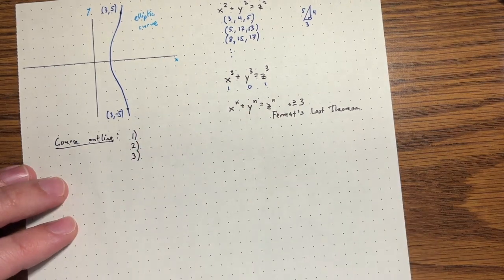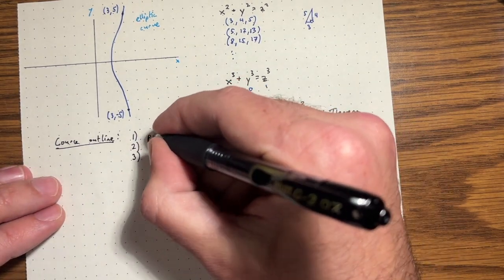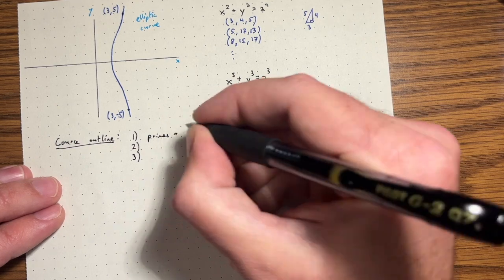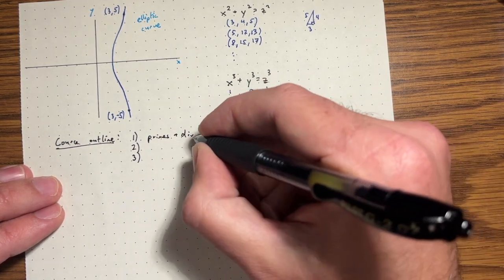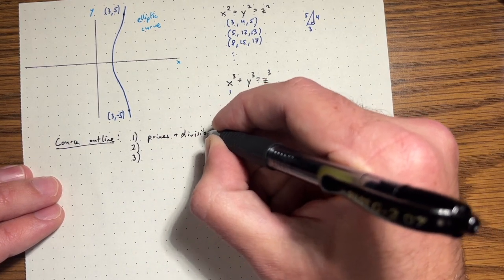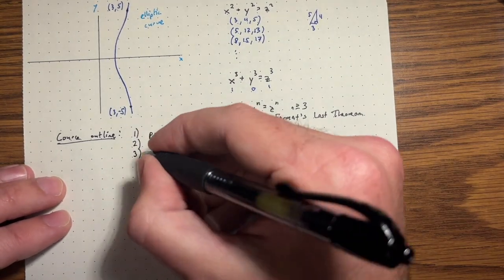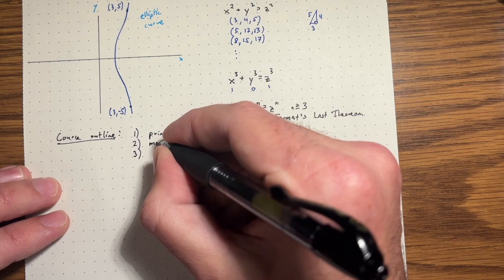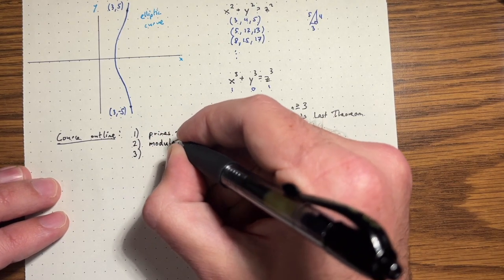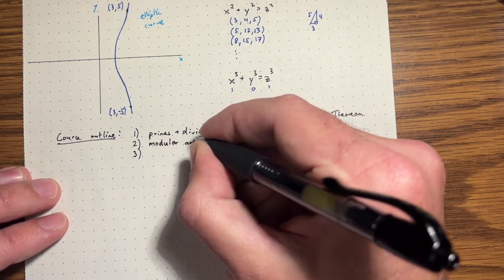So the first part, we're going to really investigate primes and divisibility. So the multiplicative structure, primes and divisibility. And then in part two, we're going to look at modular arithmetic. This is something you might've seen before.